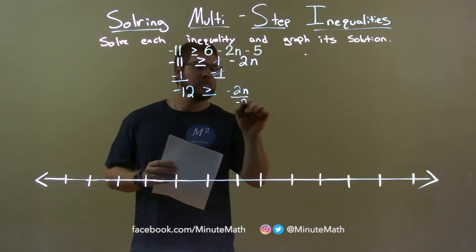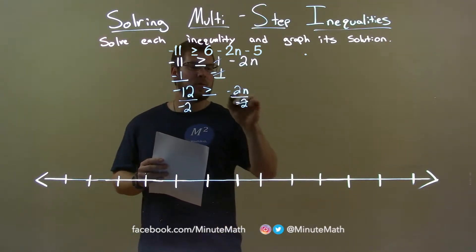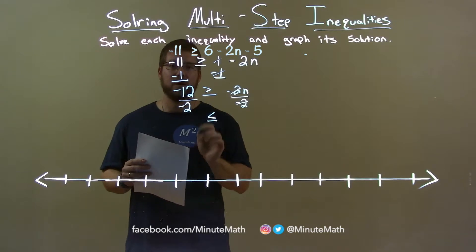Now, if I divide by negative 2 to both sides, when you divide by a negative number over the inequality, the sign is going to flip. So, this greater than or equal to sign becomes a less than or equal to sign.